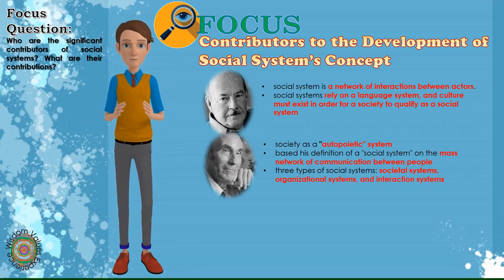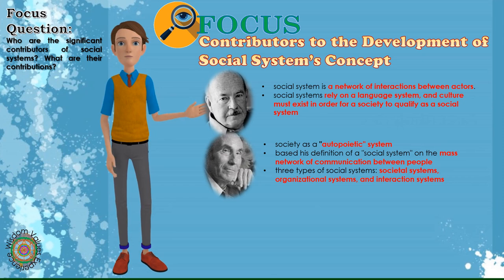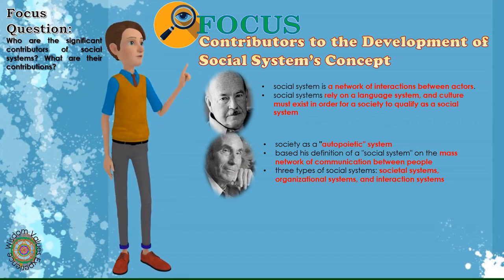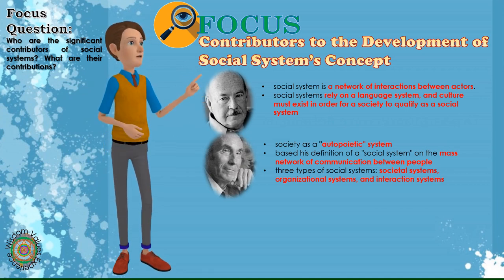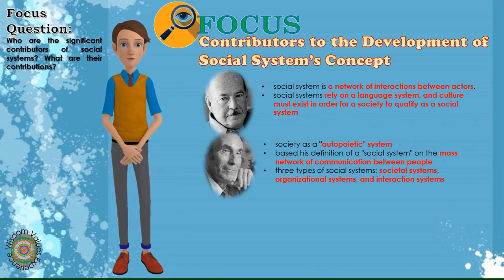Religion, law, art, education, science, and other societal systems, according to Lumen, are closed systems with various fields of interaction. Organizations were defined as a network of decisions that reproduce themselves; however, finding a real-world example is difficult. Finally, interaction systems are systems that reproduce themselves on the basis of communication rather than decision-making.